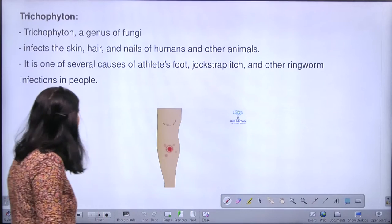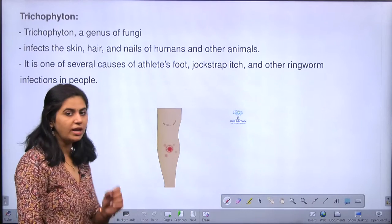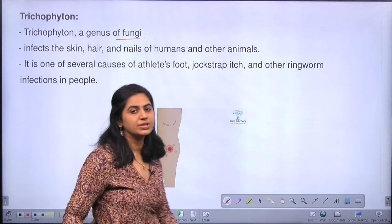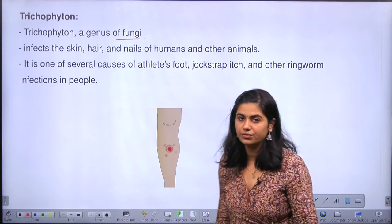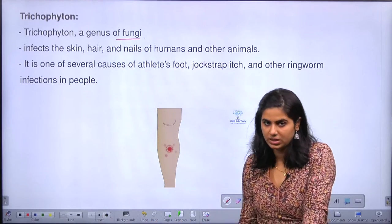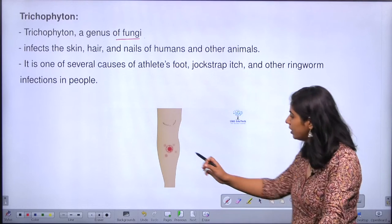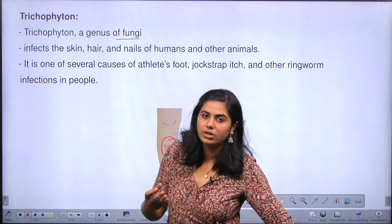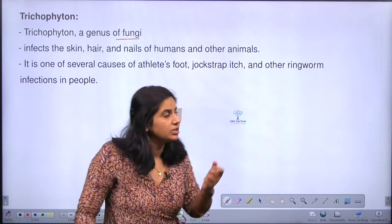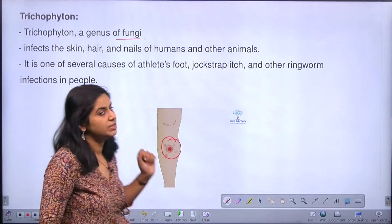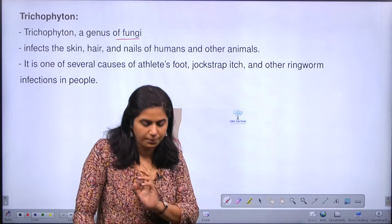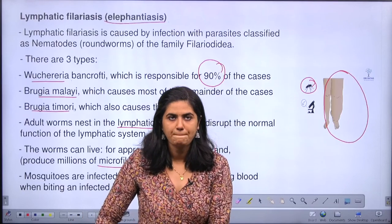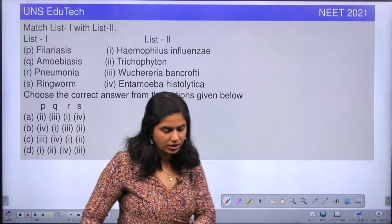The next one is Trichophyton, which is a fungus. It causes infection on the skin, hair, and nails of humans and other animals. Whenever it causes infection, the affected area appears round in shape, which is why the infection is called ringworm. So ringworm is caused by the fungus Trichophyton.